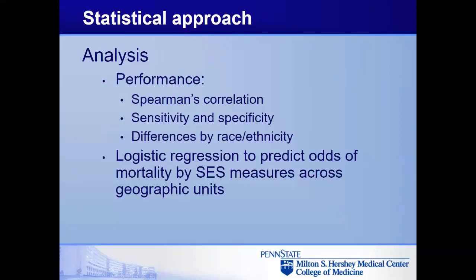Analytically, I tested the concordance of these variables across levels using a number of metrics — Spearman's correlation coefficient, sensitivity and specificity. We also assessed differences in performance by individual-level race and ethnicity. And finally, we used logistic regression to estimate the relationship between mortality and SES and how that estimate differed for individuals versus census tracts versus counties.